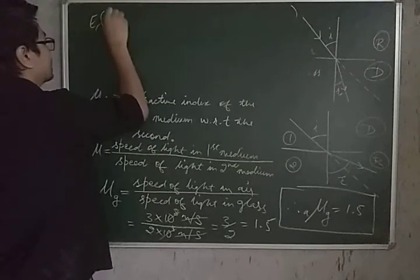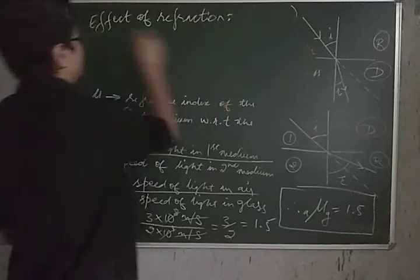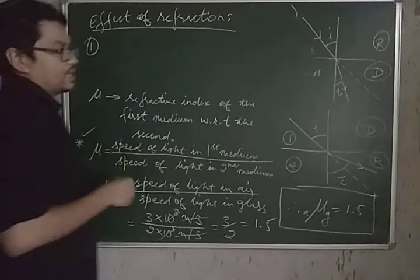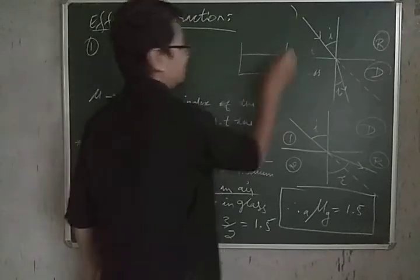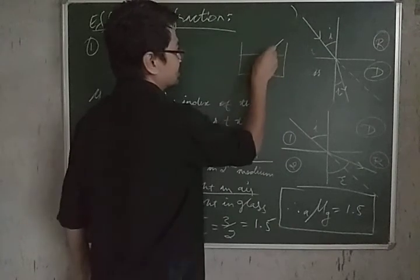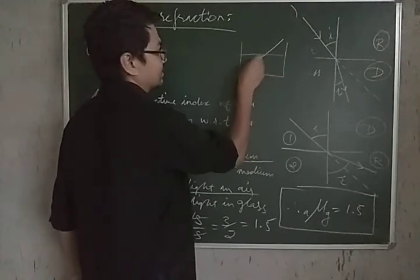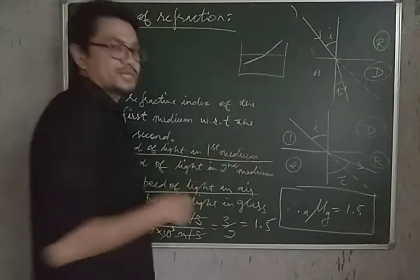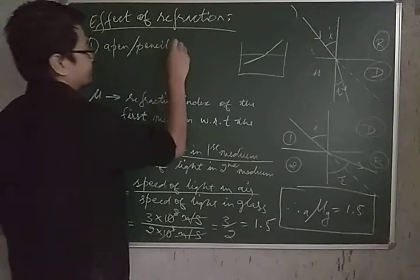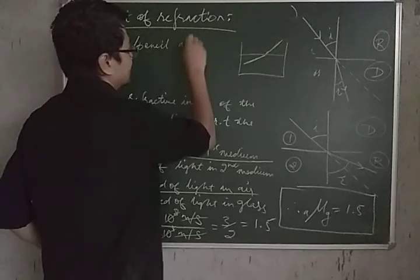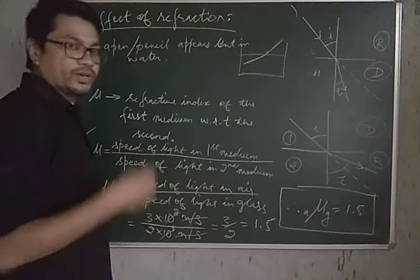One last thing I want to tell you today is the effects of refraction. There are many effects of refraction of light. For example, if you place a pencil or pen in a cup filled with water — so this is your cup or bowl of water — you place your pencil with half its length outside the water surface, it will appear to you that the pencil is bent. This appearance of a pencil or pen being bent in water is one of the effects of refraction.